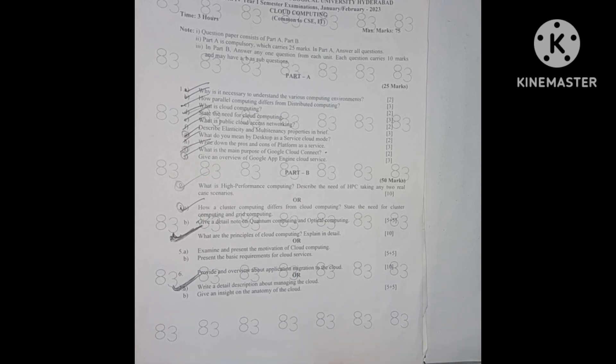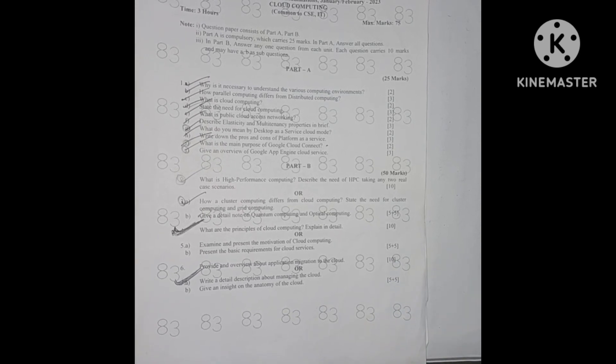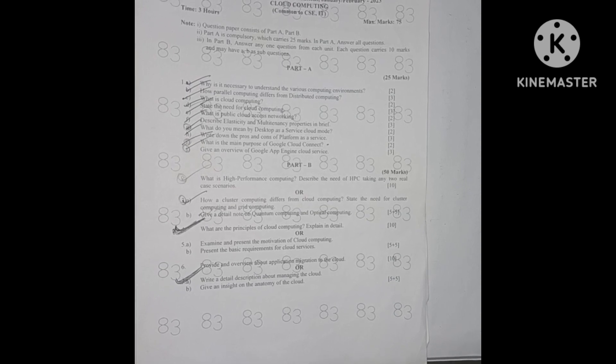The paper is divided into two sections: Part A and Part B. Part A has 25 marks of questions, and everything covers all 5 units.